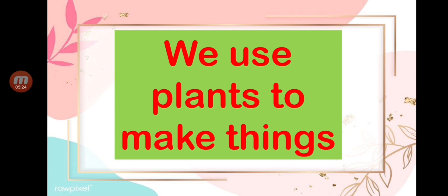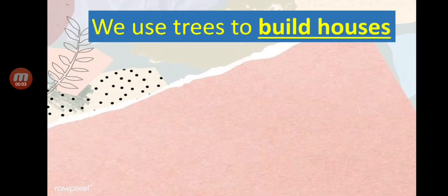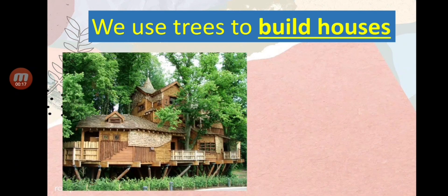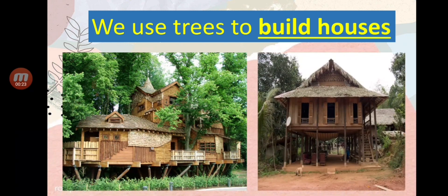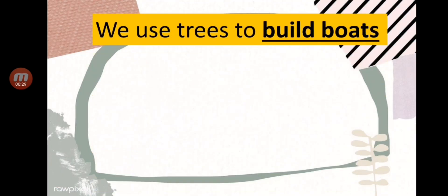Now let's talk about how we use plants to make things. We use trees to build houses. Here are examples of houses made up of trees or wood — so nice! We also use trees to build boats. Here are two examples of boats made up of wood or trees.